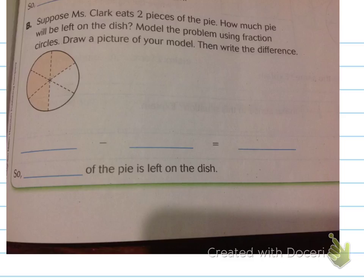Let's try one with subtracting. Suppose Ms. Clark eats two pieces of pie. How much pie will be left on the dish? Model the problem using the fraction circles. Draw a picture of your model. Then write the difference. Ms. Clark decides to eat two pieces. So two pieces will be taken away. So, I am going to say, how am I going to model this using the fraction circle? Well, that's how much she had, right? Our four-sixths. So, to model taking away, I am going to have to make these pieces.